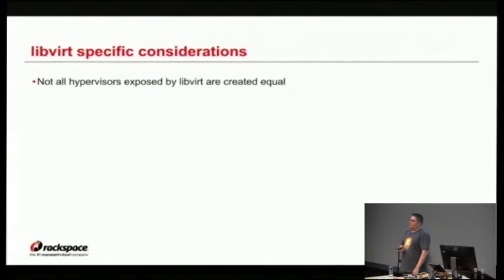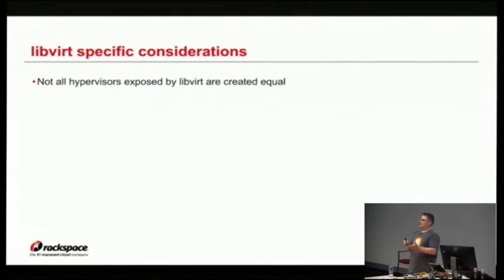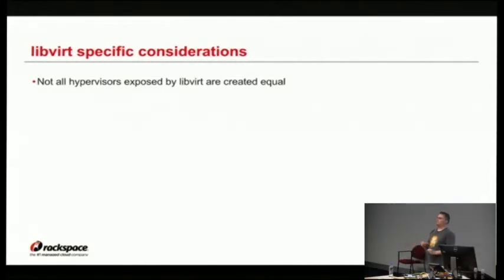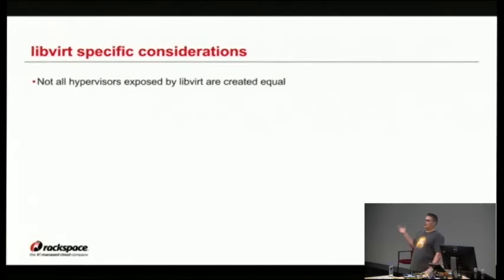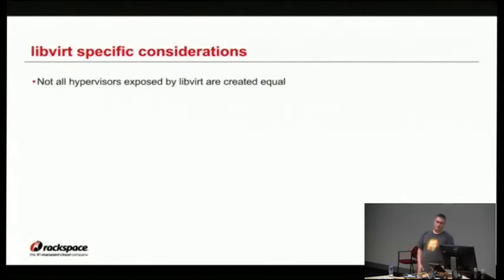Most people deploy libvirt as their hypervisor driver, so here are a few specific things about libvirt. Libvirt is an abstraction library on top of a bunch of different hypervisors — you can use Nova with libvirt using Xen, KVM, or others. Not all hypervisors under libvirt are created equal. Most people use KVM, which means the Xen code is less tested. If I was going to deploy libvirt, I would pick KVM. There are other choices like LXC, but again, not as well tested.